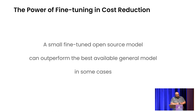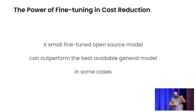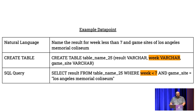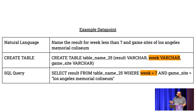The second mechanism is the power of fine-tuning. This is a bit counterintuitive, but a small fine-tuned open source model can frequently outperform a very large general model. Here's a task: converting natural language to SQL. The input is natural language and the goal is to convert it into SQL. When we ran this test, we found something very interesting. If you just use Llama 2 7B for this task, it only gets 3% accuracy. If you use GPT-4 out of the box, untuned, it gets about 78% accuracy.